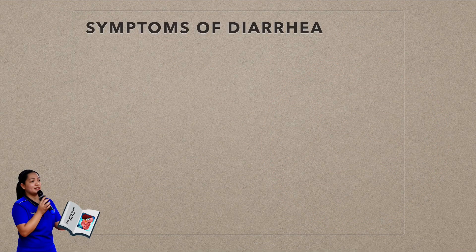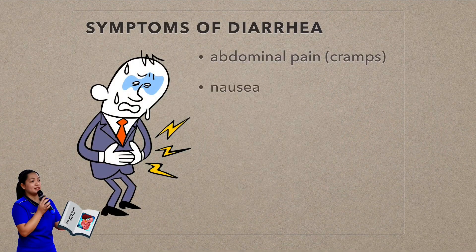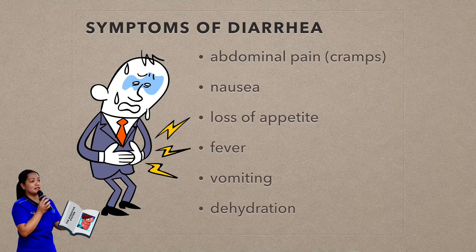Symptoms of diarrhea include the following: vomiting, abdominal pain or cramps, nausea, loss of appetite, fever, and dehydration. The difference between nausea and vomiting: nausea is an uneasiness of the stomach that often accompanies the urge to vomit but doesn't always lead to vomiting. Vomiting is the forcible — voluntary or involuntary — emptying of the stomach contents through the mouth, also called throwing up.